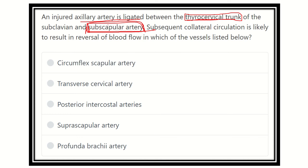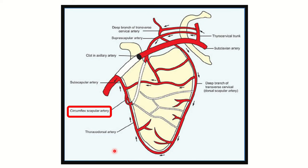Specifically, the subscapular artery is a branch from the third part of the axillary artery. We have to find out through which pathway the collateral circulation will be developed. The options are: the circumflex scapular artery, transverse cervical artery, posterior intercostal artery, suprascapular artery, and profunda brachii artery.